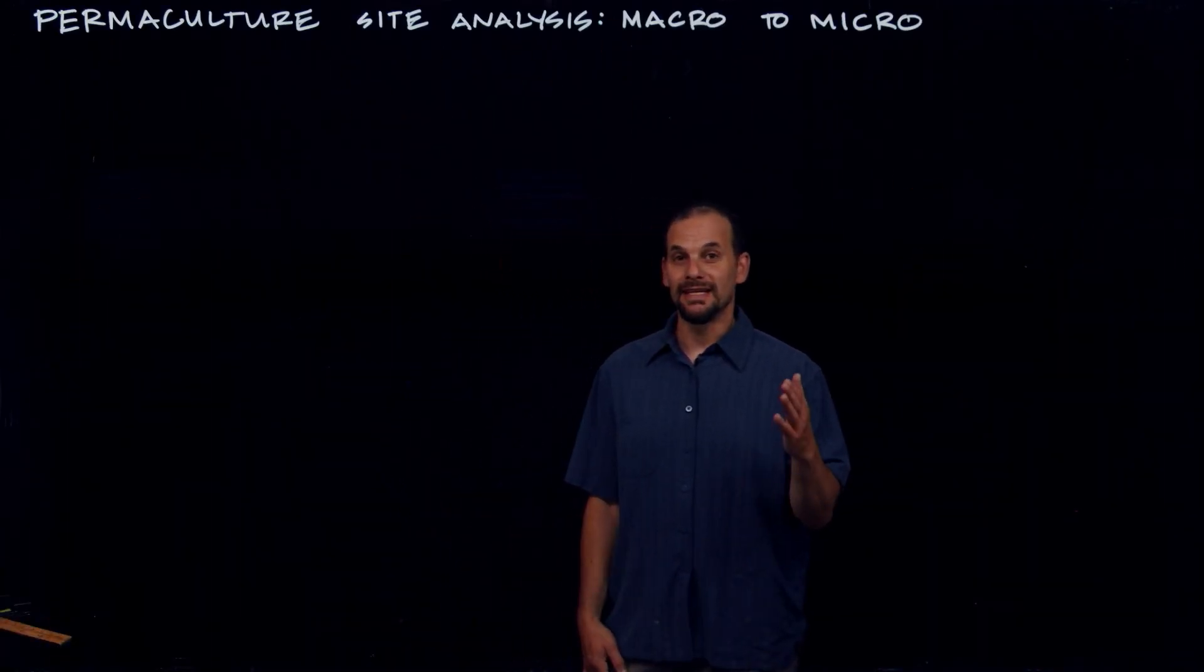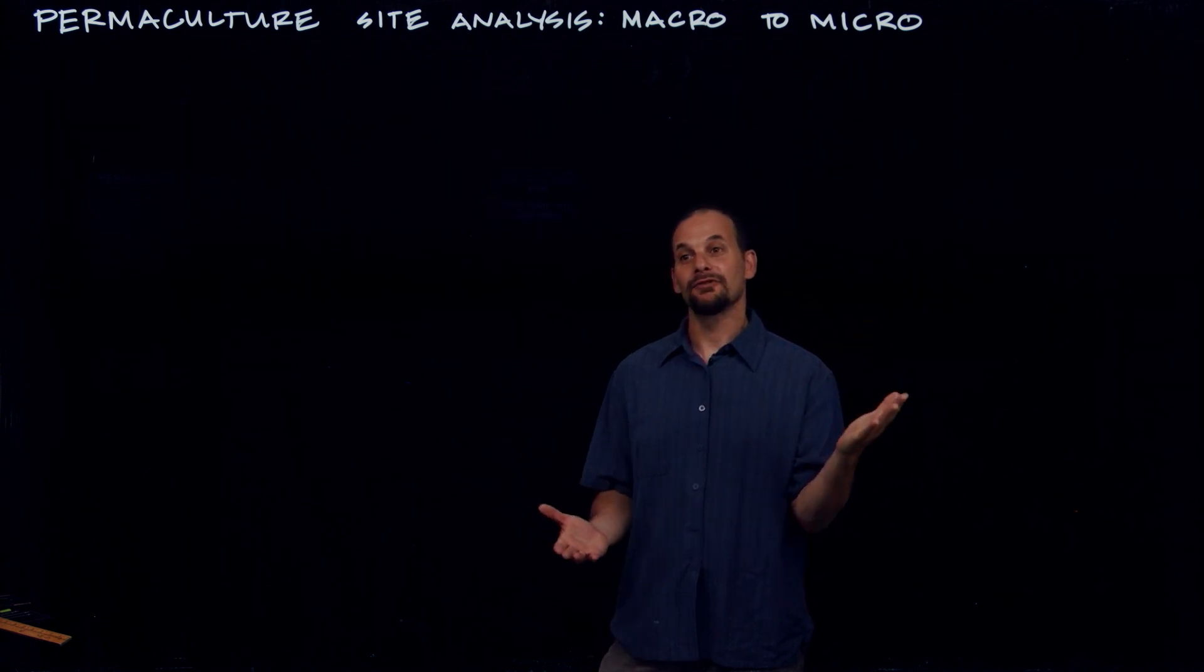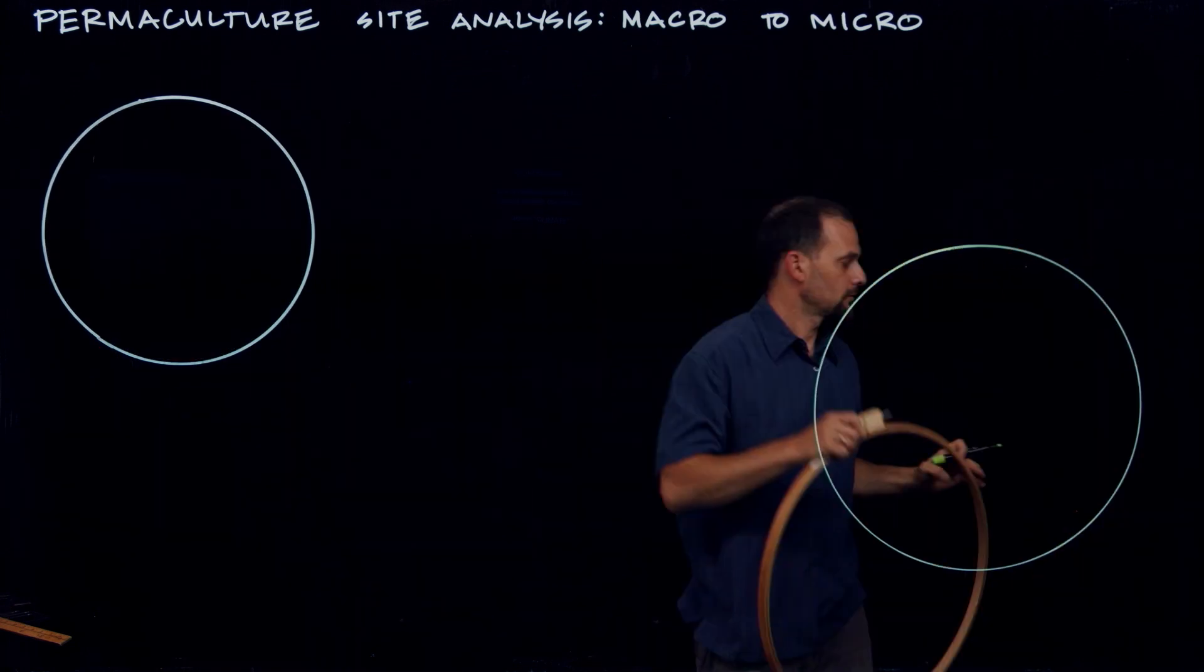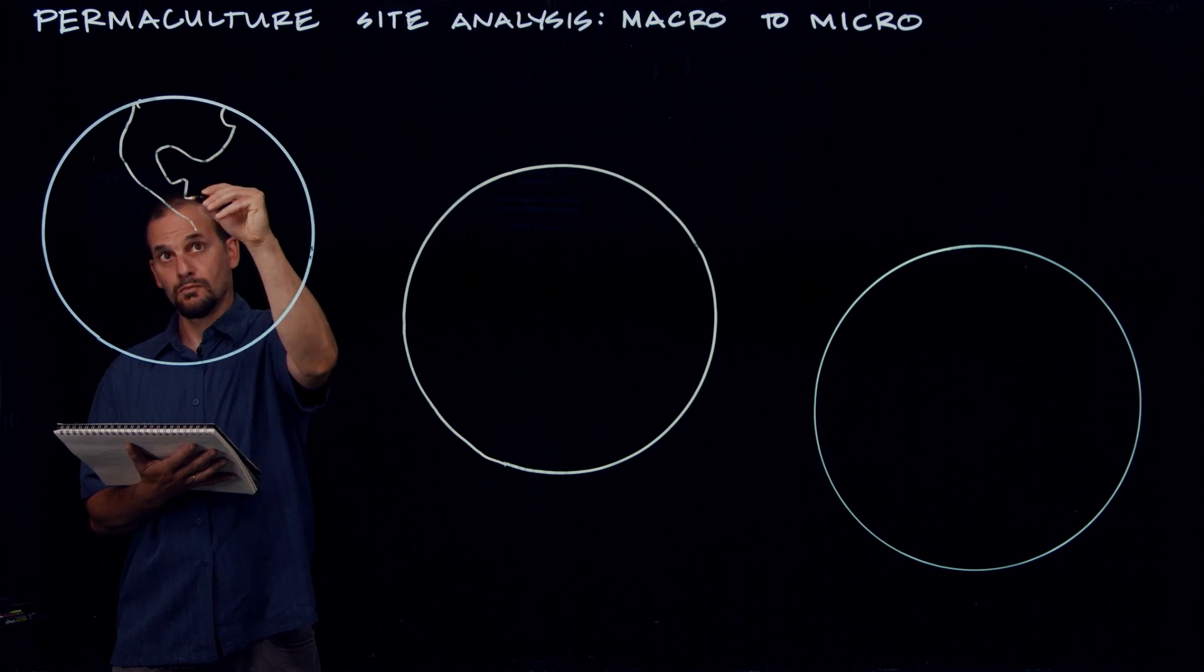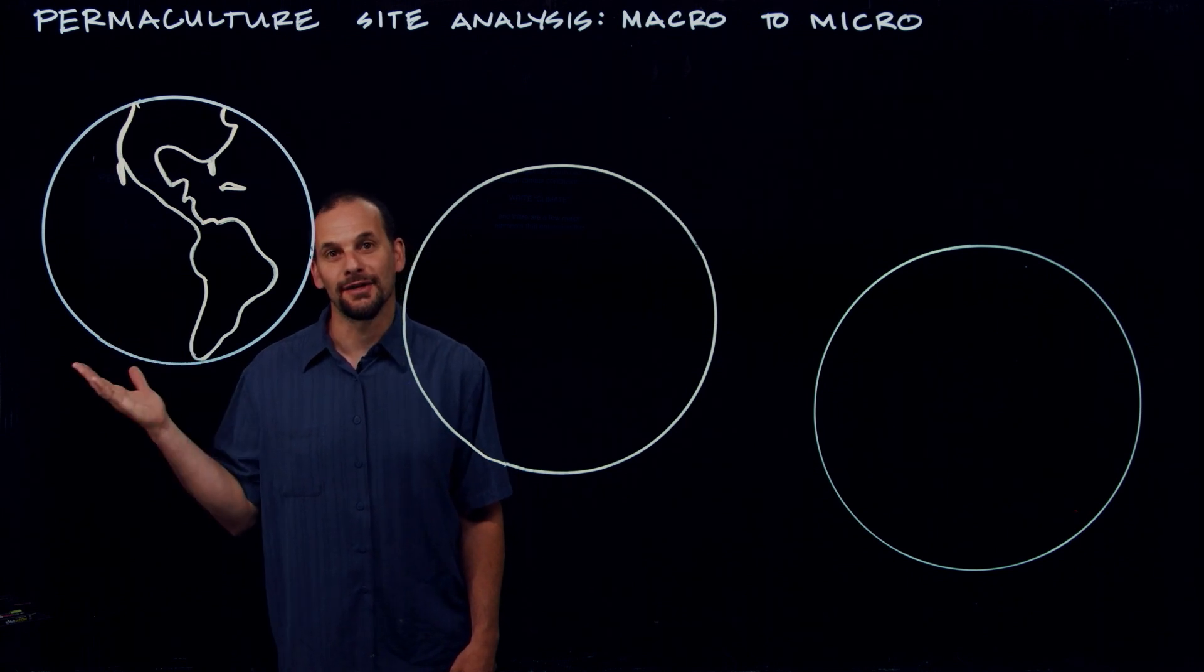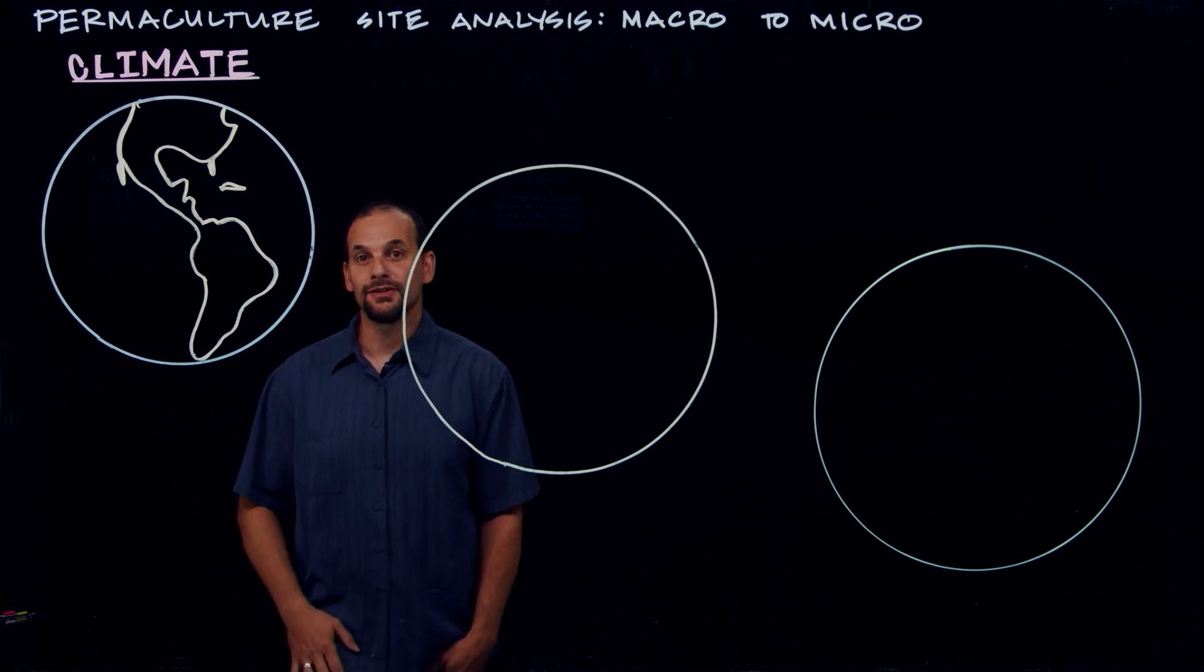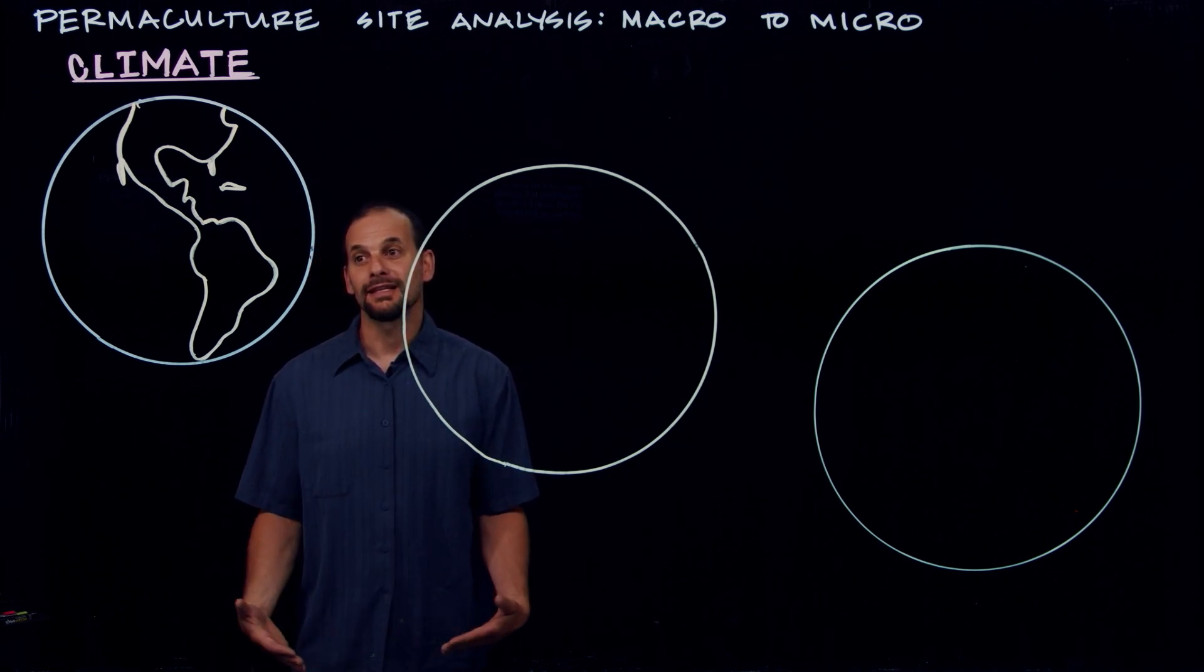Permaculture site analysis begins from outer space, looking in at our magnificent planet. Every region on Earth has unique climate conditions. And there are a few major elements that determine the climate of a place. The first thing we look at is latitude.